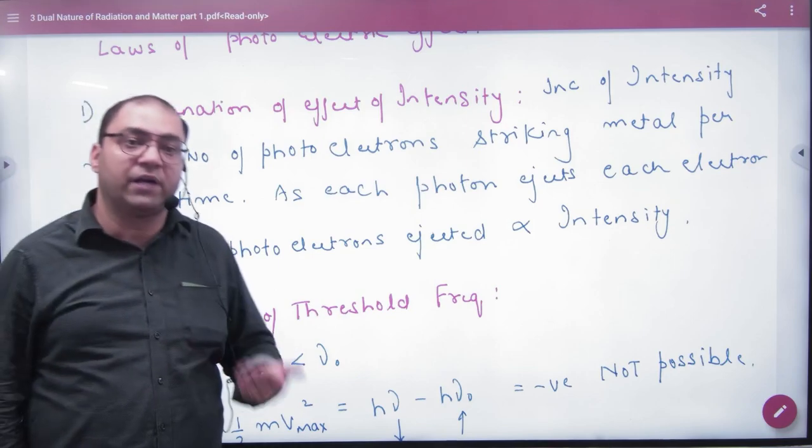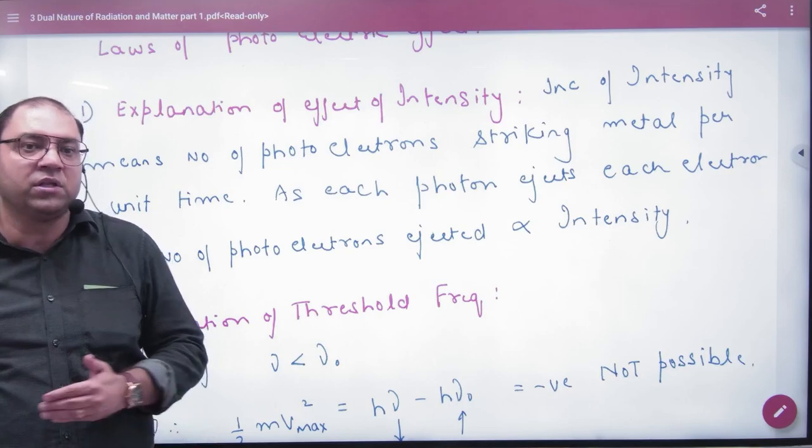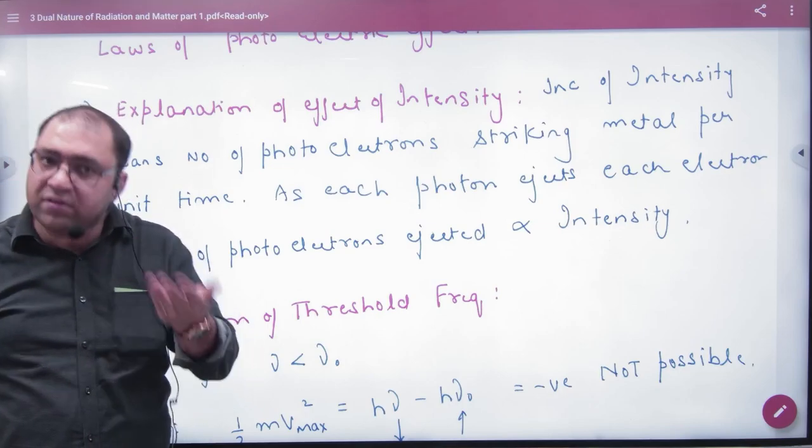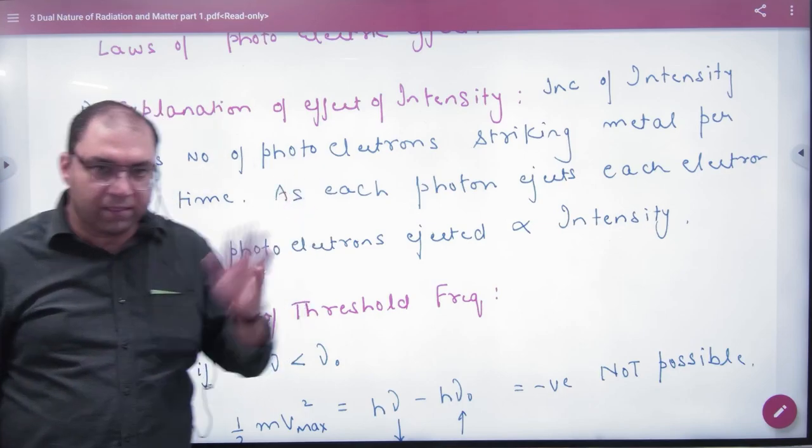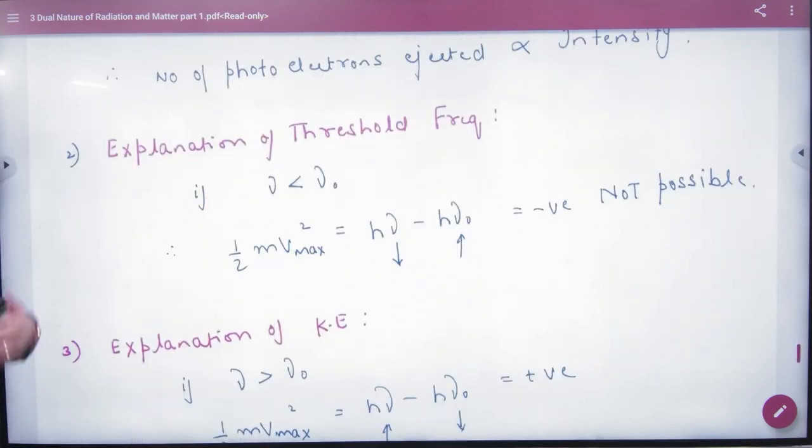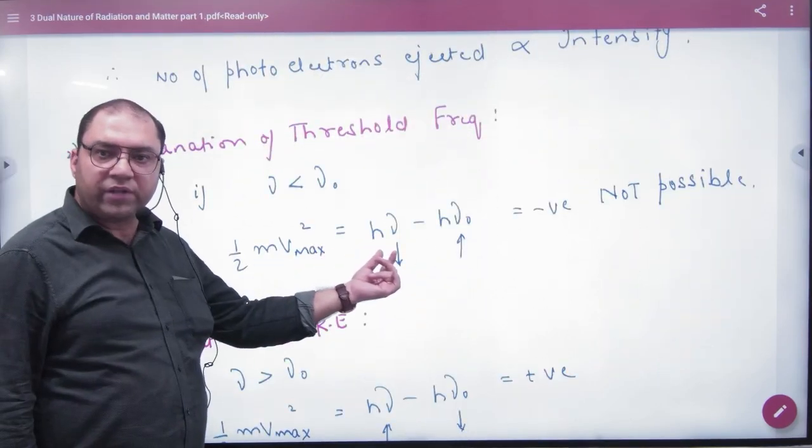When you increase intensity, you increase the number of photons, which increases the photoelectric current. However, if the frequency is less than the threshold frequency, the kinetic energy becomes negative and electrons will not be emitted.